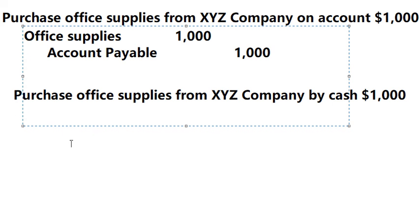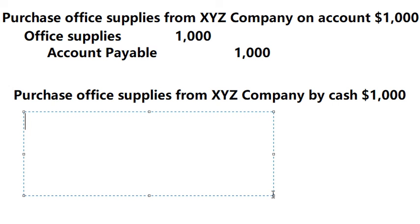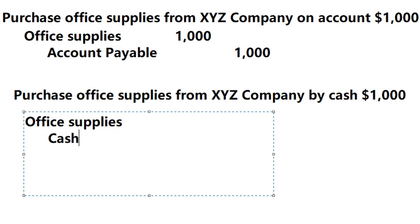The next one — this is by cash, so we have office supplies and cash. I will put 1000 here and 1000 here.